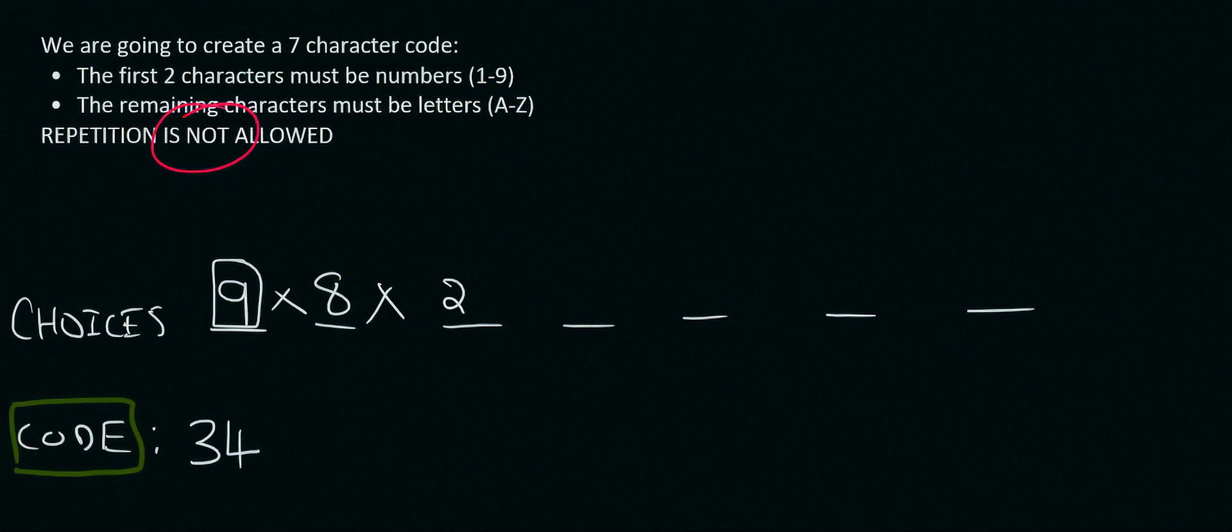Now for the letters, for the first letter there are 26 options. Let's say we chose a B. But now that you've chosen a B you can't choose a B again. So there's 25 options. Now there are only 24 options. Let's say we chose an F. Then there's 23 options. Let's say that's a G. And then there are 22 options. And let's say that was an X.